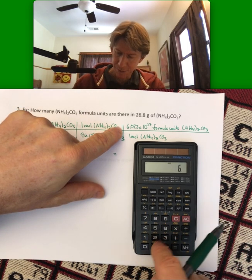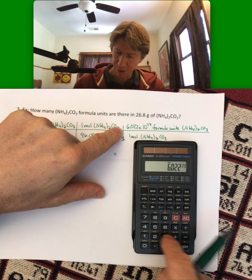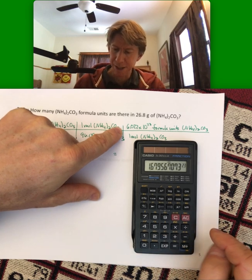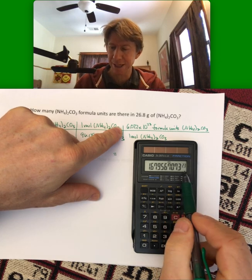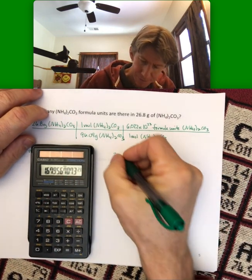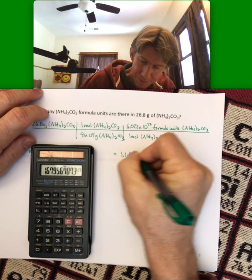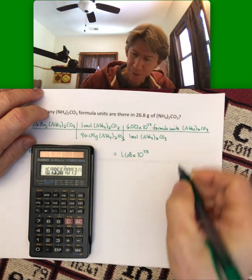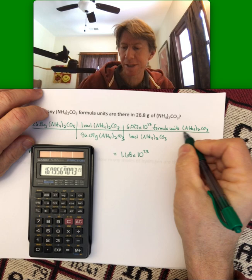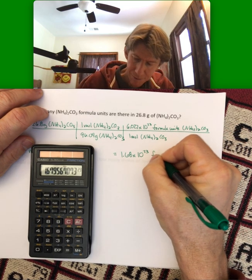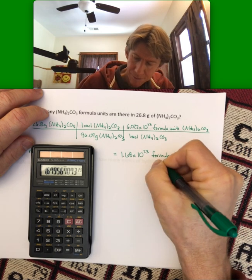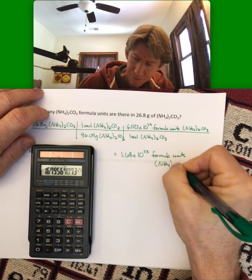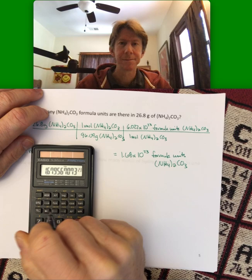times 6.022 exponent 23rd. This time I get 1.679, round that up, 1.68 times 10 to the 23rd. And my final units are formula units ammonium carbonate. Nice.